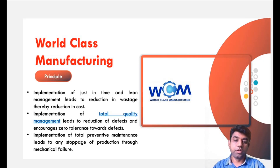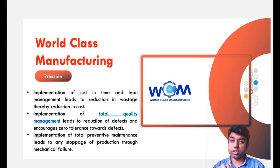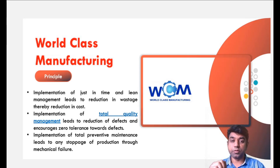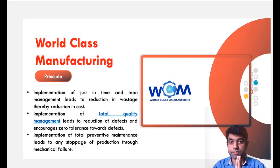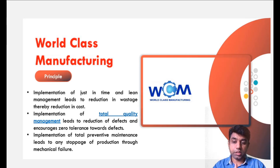In order to have world class manufacturing, we need to implement the just-in-time philosophy that we have already discussed. We must have the concept of lean manufacturing — also discussed — because that is about the reduction of waste. If you are reducing the eight different kinds of waste discussed during lean manufacturing, you can achieve world class manufacturing. You can implement the principles of TQM — Total Quality Management — covered during chapter number two. Also implementing TPM — Total Preventive Maintenance — which ensures there is no stoppage of production or any problem related to maintenance even while production is happening.